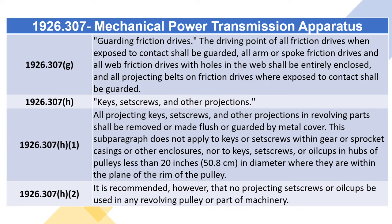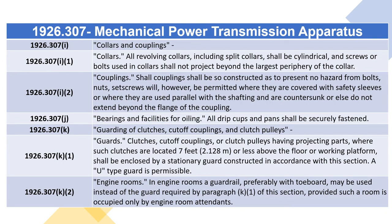1926.307(h) Keys, Set Screws, and Other Projections. 1926.307(h)(1): All projecting keys, set screws, and other projections in revolving parts shall be removed, made flush, or guarded by a metal cover. This does not apply to keys or set screws within gear or sprocket casings or other enclosures, nor to keys, set screws, or oil cups in hubs of pulleys less than 20 inches in diameter where they are within the plane of the rim of the pulley. 1926.307(h)(2): It is recommended that no projecting set screws or oil cups be used in any revolving pulley or part of machinery. 1926.307(i) Collars and Couplings: All revolving collars including split collars shall be cylindrical, and screws or bolts used in collars shall not project beyond the largest periphery of the collar.